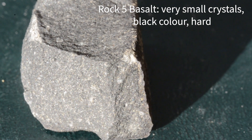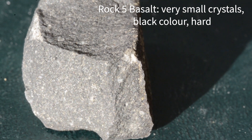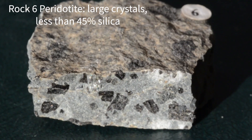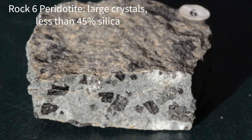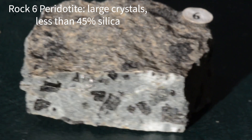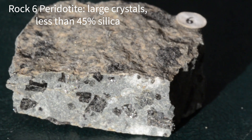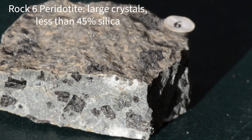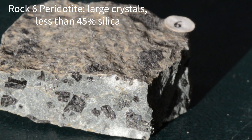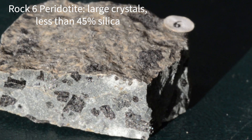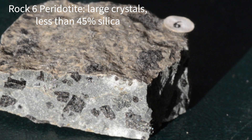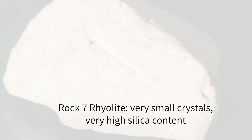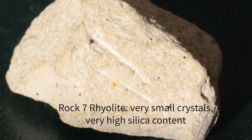This rock is called peridotite. It also has large crystals, which means it is intrusive. It doesn't have much silica, which is why it's a dark color.